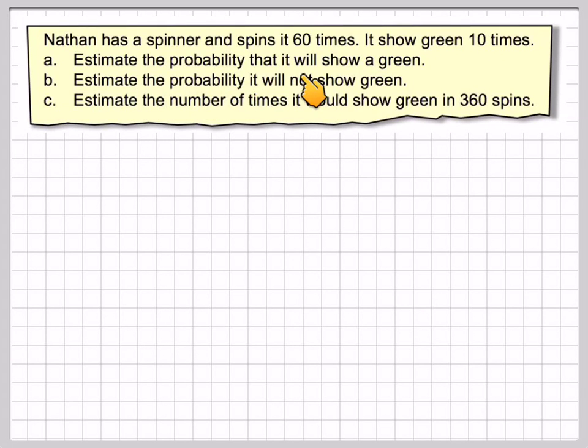Nathan has a spinner and spins it 60 times. It shows green 10 times. Estimate the probability that it will show a green. Estimate the probability it will not show a green and estimate the number of times it would show green in 360 spins.